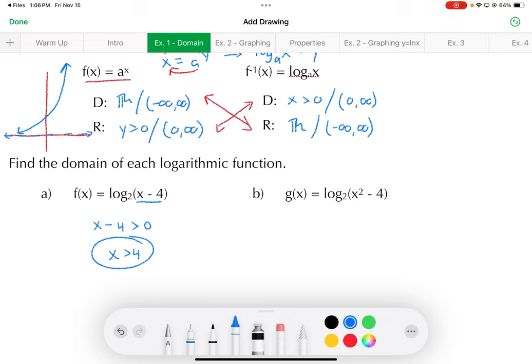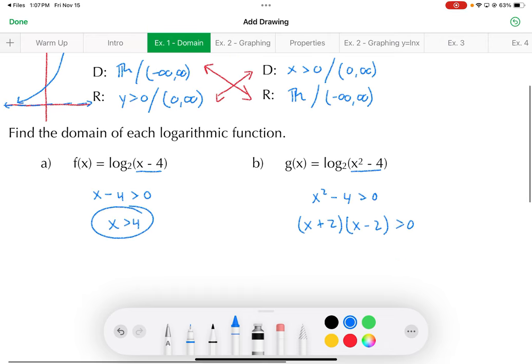Next one's a little tougher. Notice the argument in g of x is quadratic. x squared minus 4 greater than 0 again. But now that it's quadratic, this is where we need to do a sign analysis to solve this. We'll factor it. So, roots or zeros are negative 2 and positive 2.